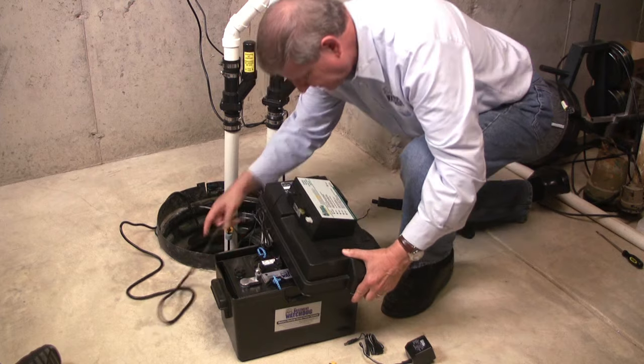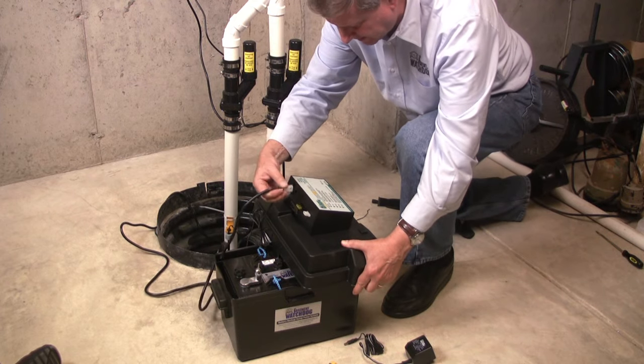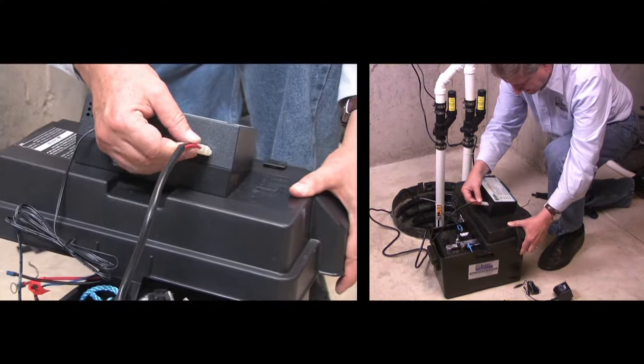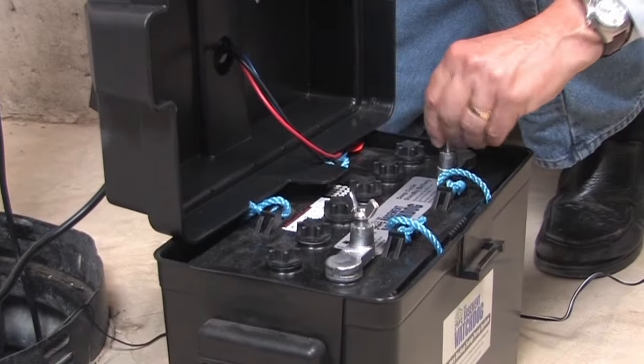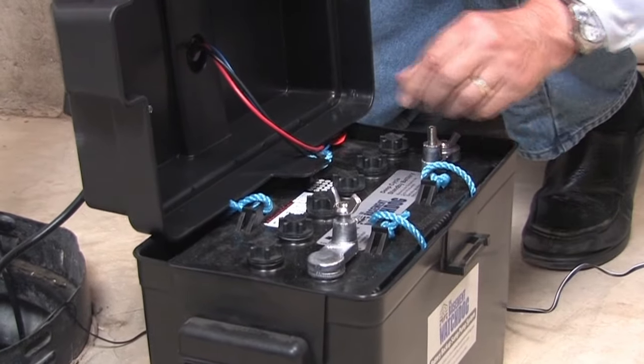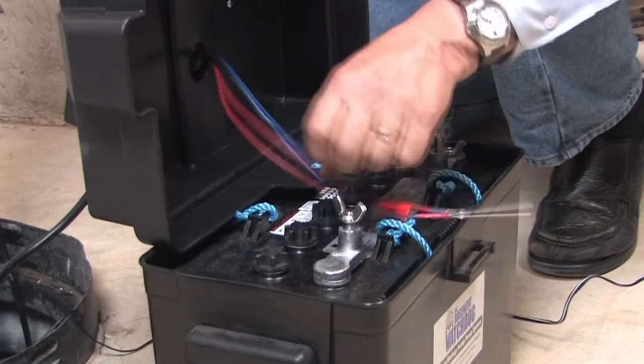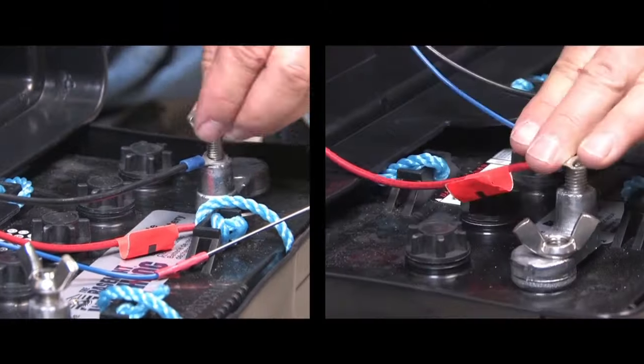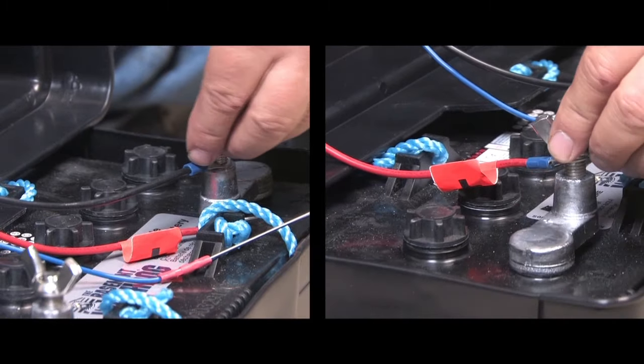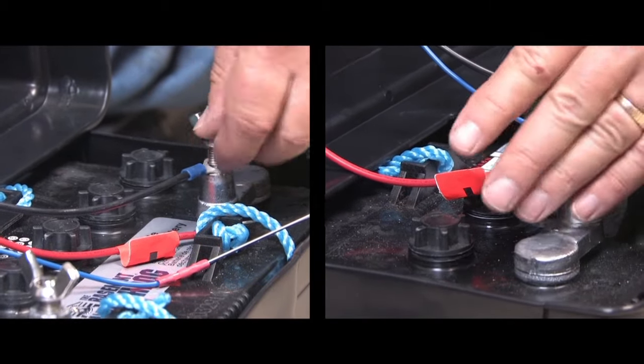Remove the security tag from the backup pump and plug the pump into the back of the control unit. Remove the wing nuts from the battery and connect the battery wires to the battery terminals: the black wire to the negative post and then the red wire to the positive post. Replace the wing nuts and tighten them.